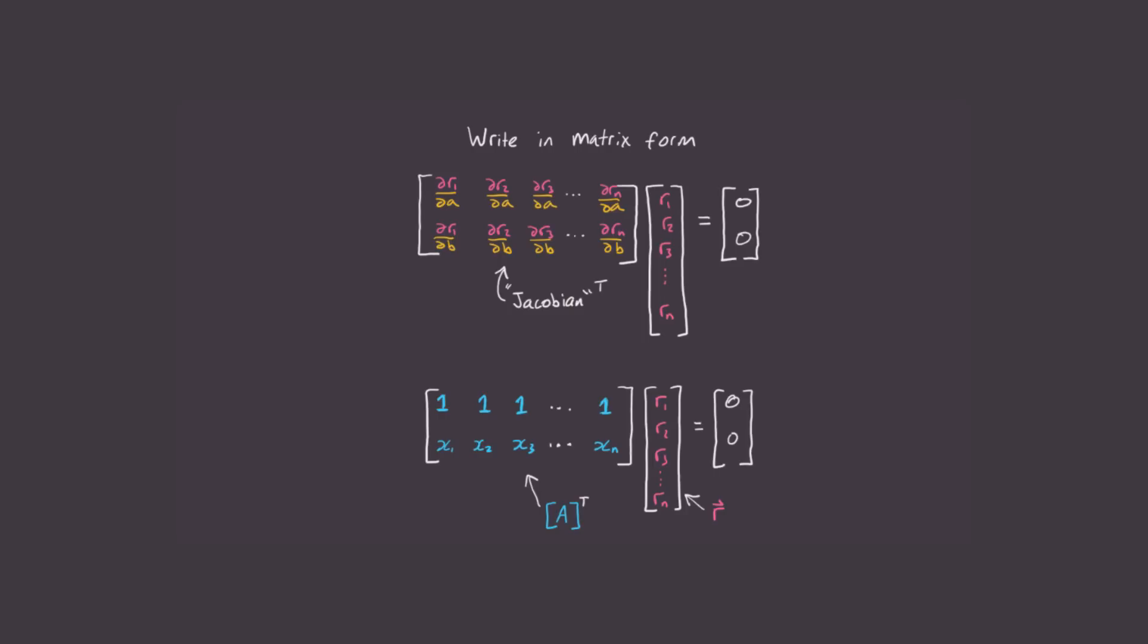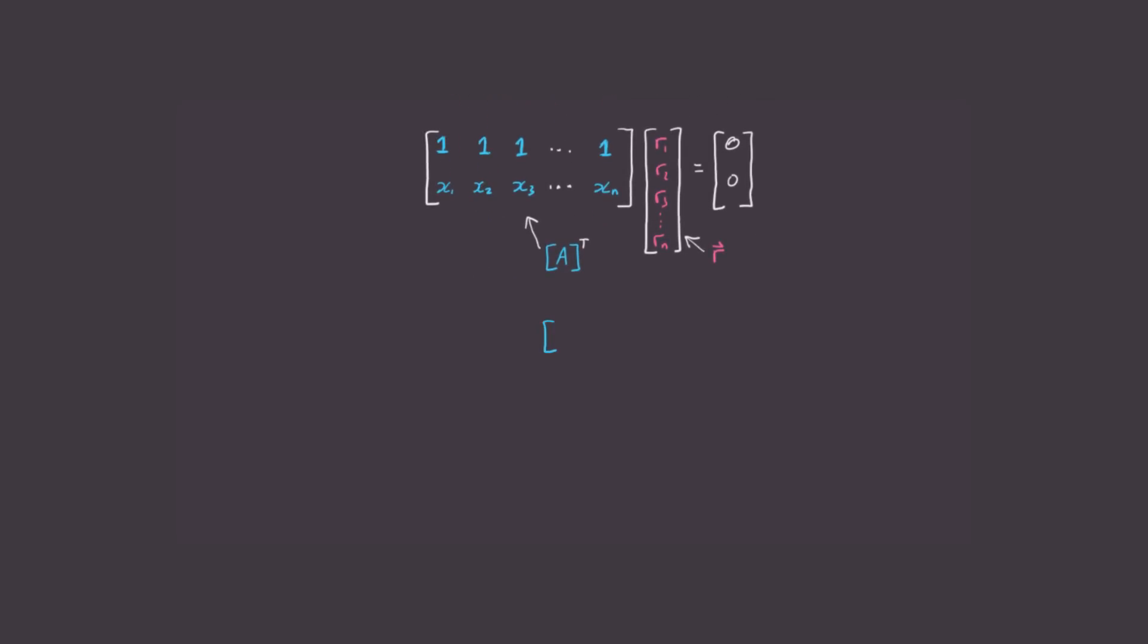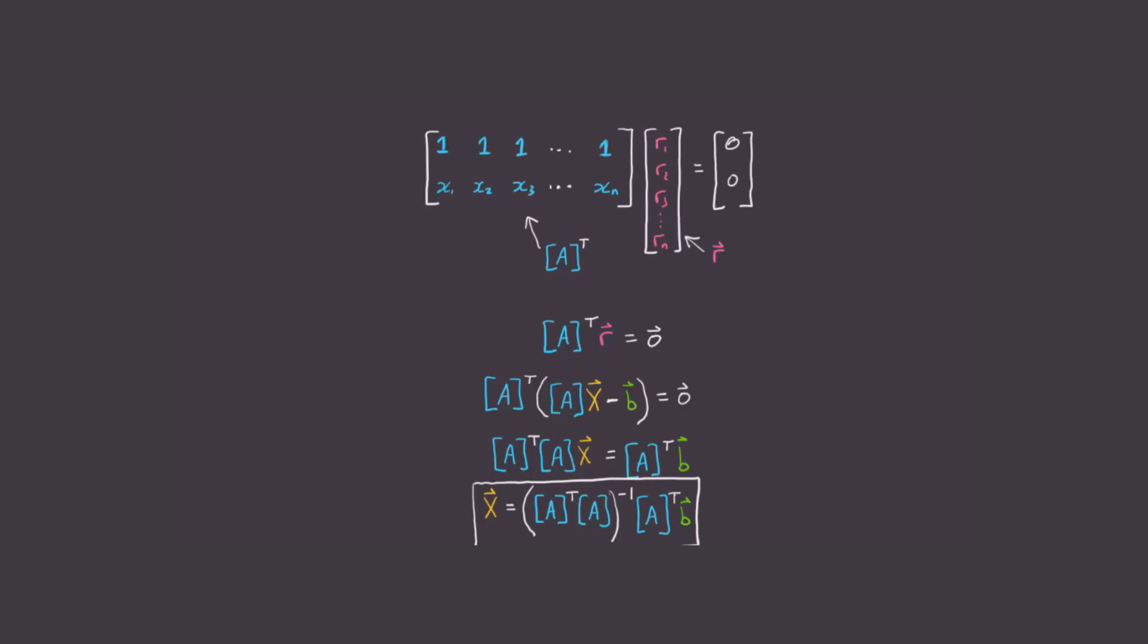Okay, so what we have here at the end of all this calculus in linear algebra is that our optimum value occurs when A transpose r is equal to zero. But don't forget that the residual vector is just A times x minus b, so let's sub that in. Let's multiply the A transpose through and bring the A transpose b to the right-hand side. Now, if A transpose a is invertible, then we can solve for the vector x by inverting both sides. And oh my god, we've done it. We've found the vector x which contains the parameters of the fitting function f of x is equal to a plus bx. With just a single equation, we get the vector x which contains the optimal values a and b.